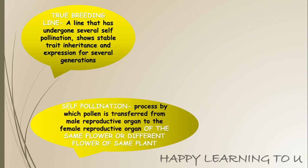Let me tell you what is self-pollination. Pollination, as you know, is a transfer of pollen from the male reproductive organ to the female reproductive organ. When this transfer occurs within the same flower or a different flower of the same plant, it is known as self-pollination, because it is within the same plant.